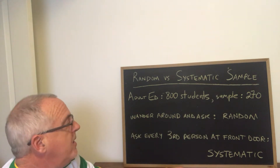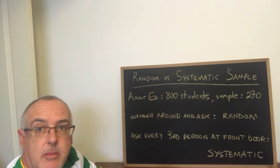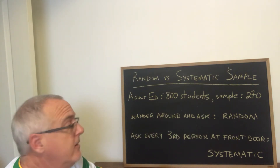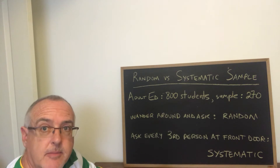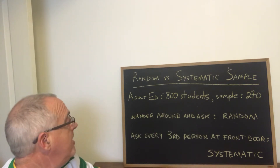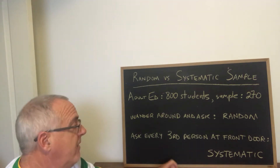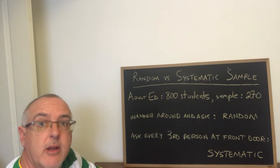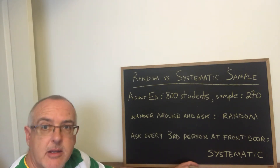If we wander around the school and ask people until we have the answers from 270, that's random sampling. But if we stand at the door and ask every third person who comes in in the morning until we have 270, that's systematic sampling.